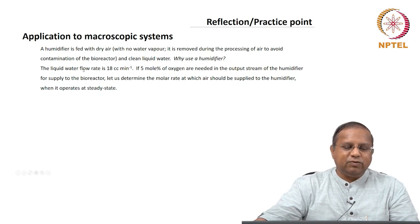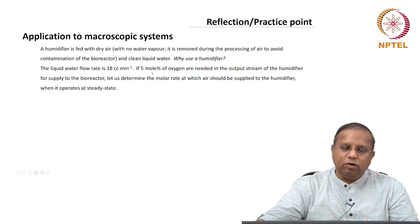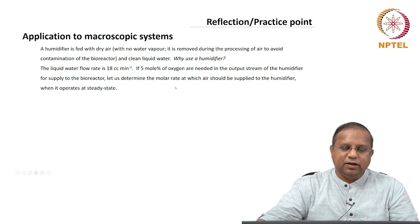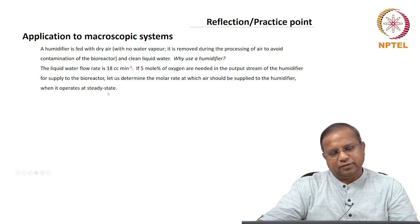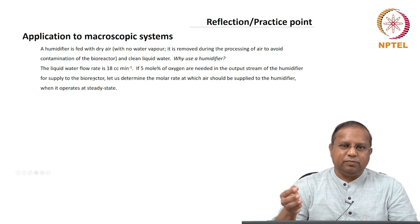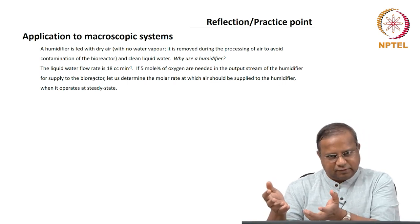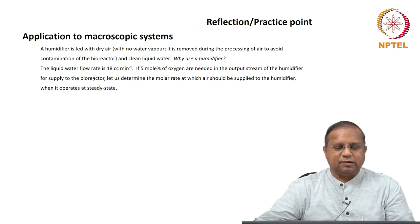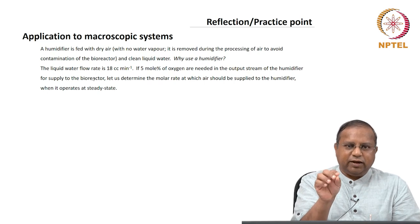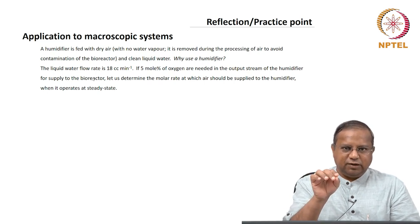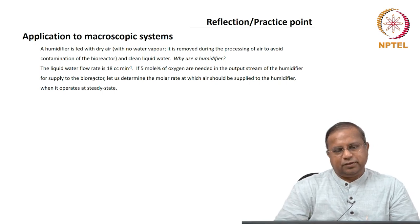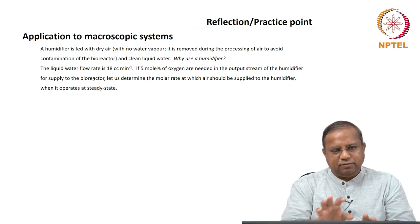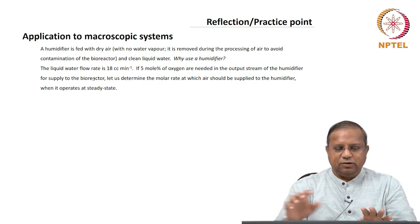The liquid water flow rate is 18 cc per minute. If 5 mole percent of oxygen is needed in the output stream of the humidifier for supply to the bioreactor, let us determine the molar rate at which air should be supplied to the humidifier when it operates at steady state. Steady state means that properties of interest at a particular point do not change with time in the system — the unchanging nature with time at a particular point is essentially what steady state is.